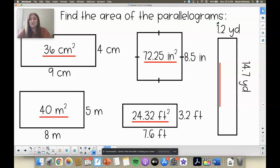And then our last one here. Let's try 1.2 times 14.7. So go ahead and try that one. Move your decimal two places when you're done. That one is 17.64 yards squared.